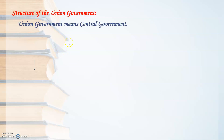The union executive — structure of the union government. Union government means the central government. Students, you have to remember that India has two types of government: central government, also called union government, and state government. Union government means the government that takes care of the entire country of India.